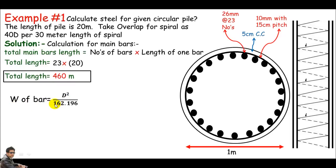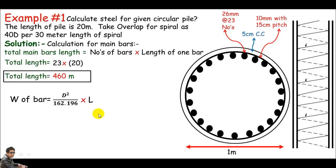The weight of a round bar is calculated as: W = d² / 162.196, which is the formula for weight of a round bar in kg per meter. To understand where this formula comes from, watch the proof video in the same playlist. When I multiply this unit weight by the total length, I get the overall weight for all the steel. Here, d is the diameter of the bar in mm.